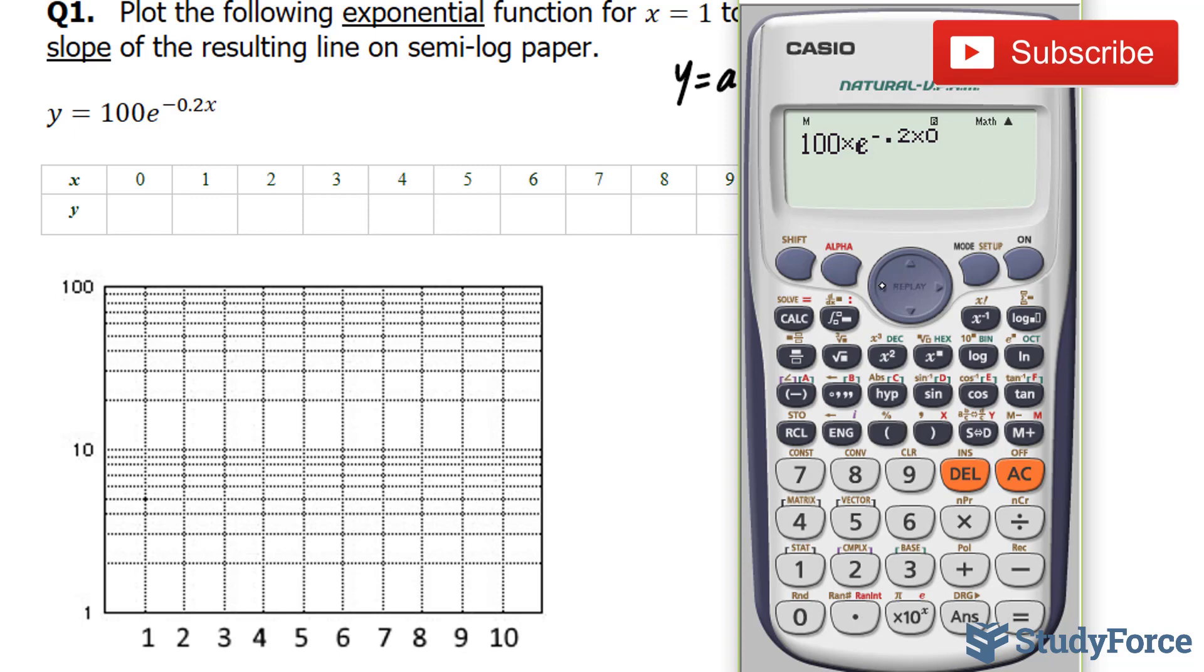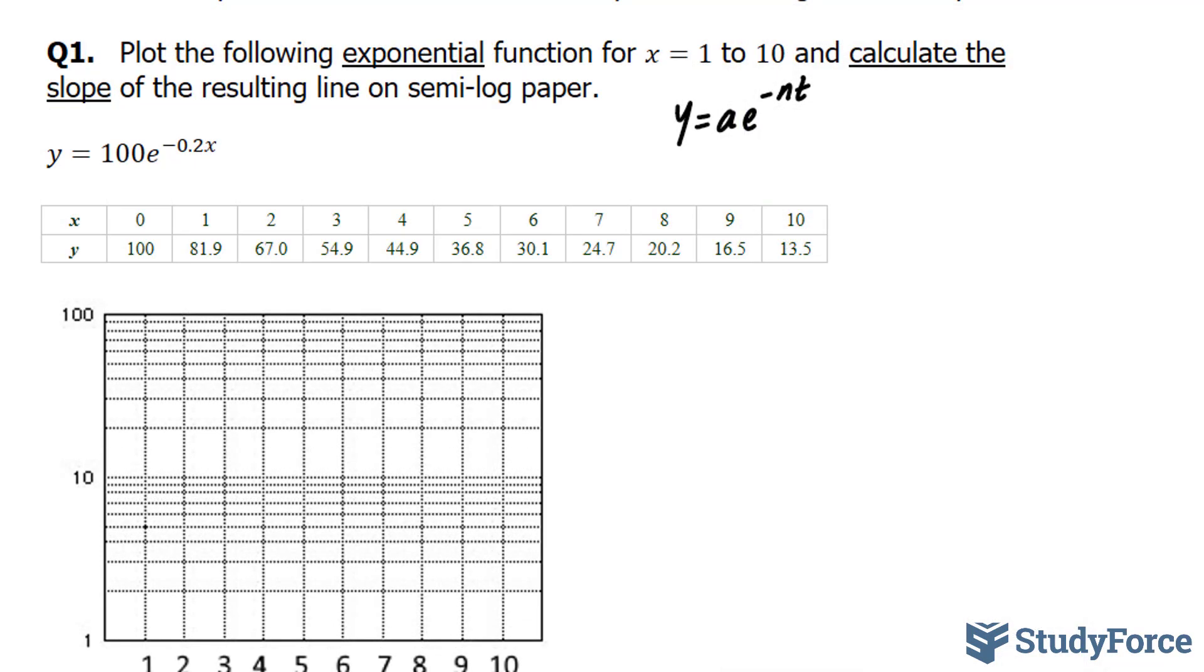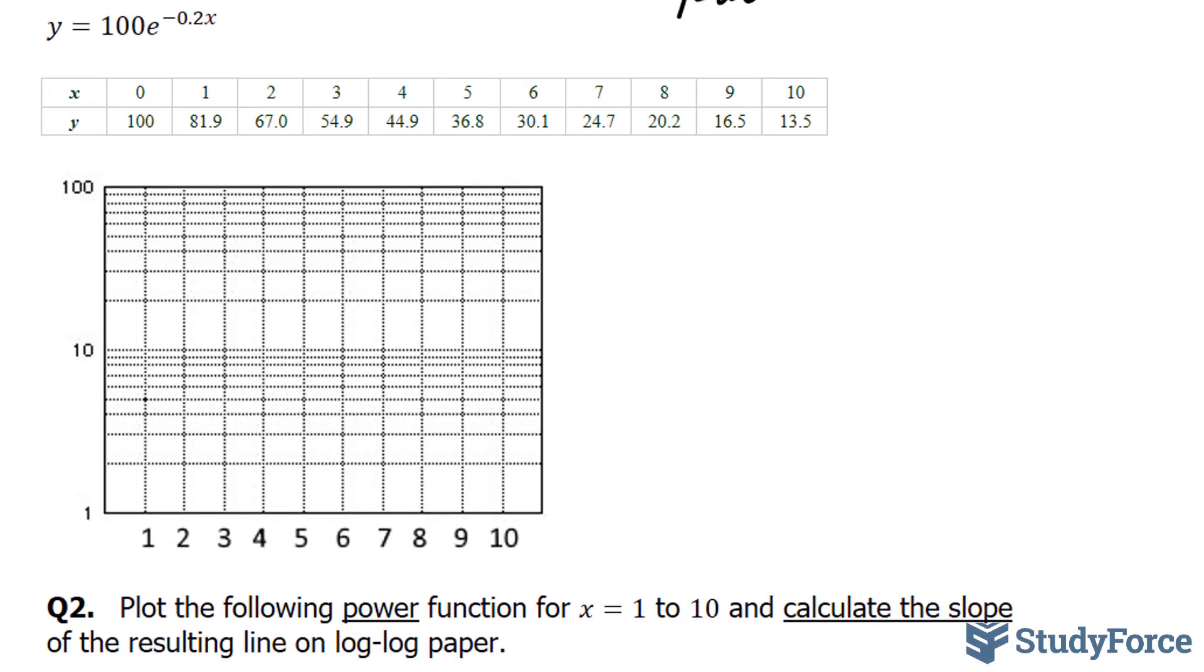For the next input 1, all I have to do is change this 0 into a 1. And that gives me 81.87. I'll do this for the rest of the inputs. And these are the following outputs you should get. So I've gone ahead and filled this out. Now I have to plot these points.